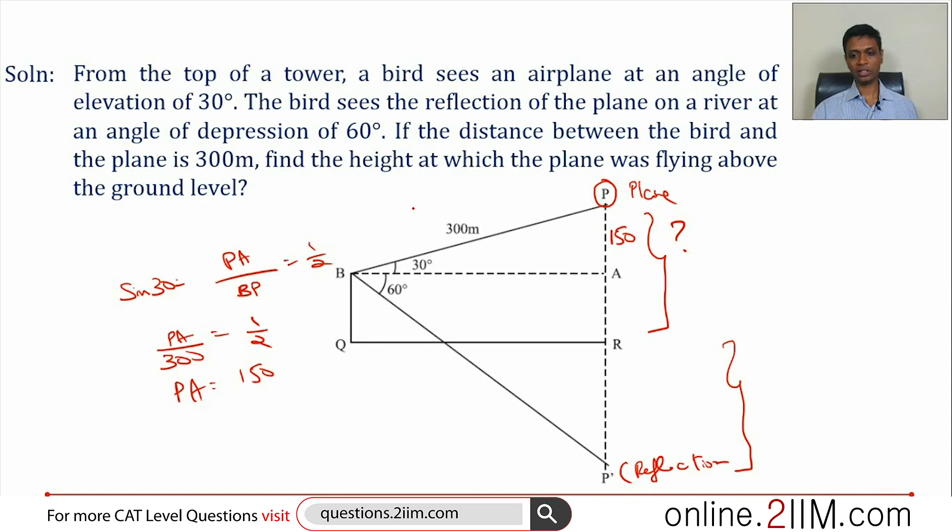We can find this. Tan 30 is 1 by root 3. This distance is 150 root 3, and so BA is 150 root 3. That much we know.